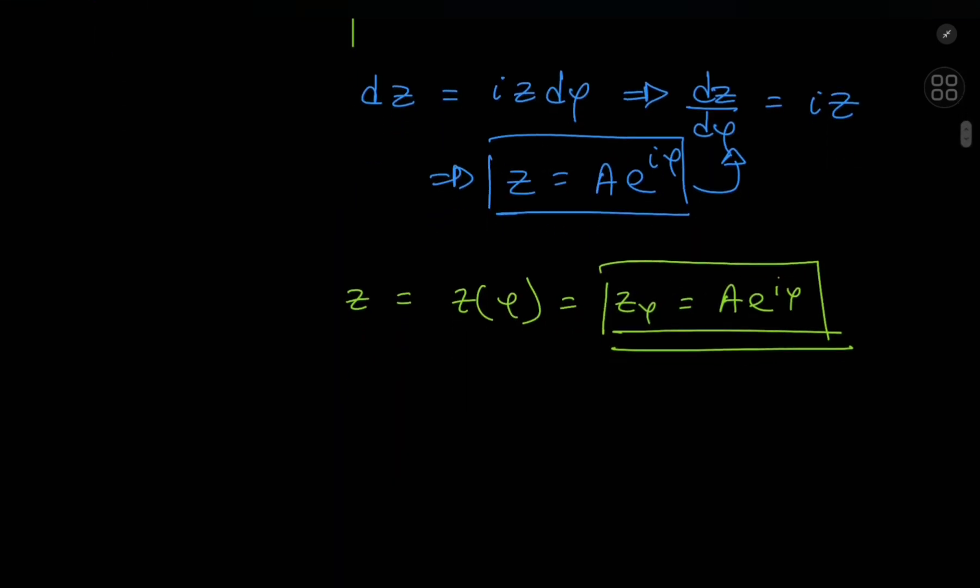So this implies that z at phi equals 0 equals z nod equals a times e to the i times 0. And this is just a times e to the 0 and e to the 0 is 1, so this implies that a equals z nod.